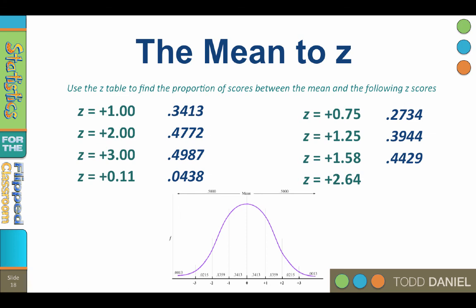And for z equals 2.64, 0.4959. Now that you have these basics, it's time to learn to find proportions under the normal curve.